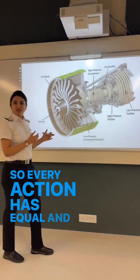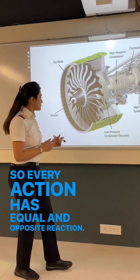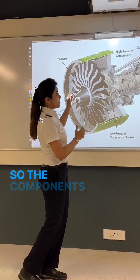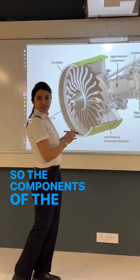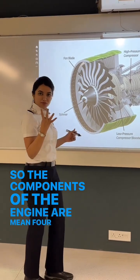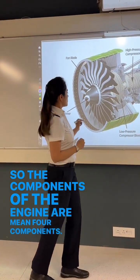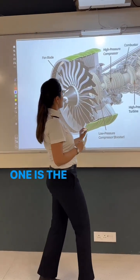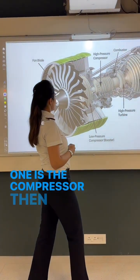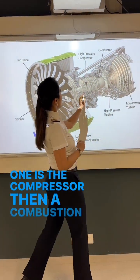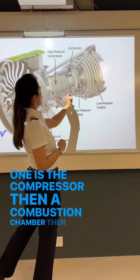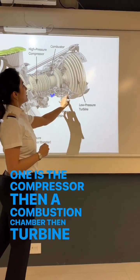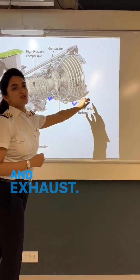Every action has an equal and opposite reaction. The components of the jet engine are four: one is the compressor, then a combustion chamber, then turbine and exhaust.